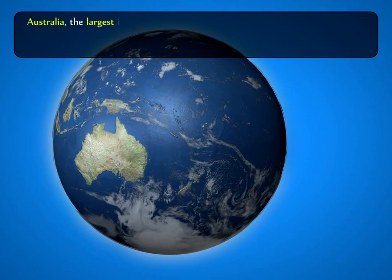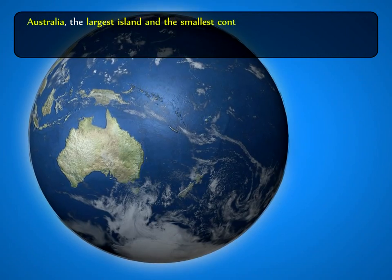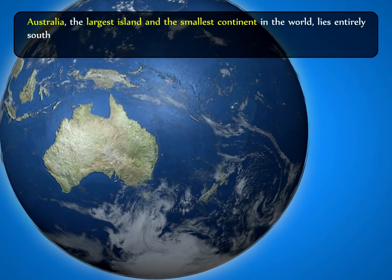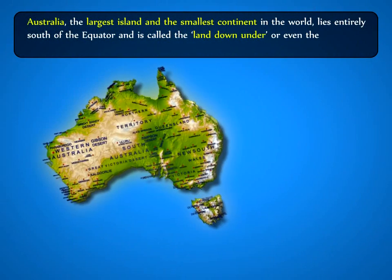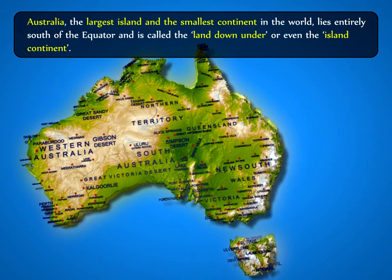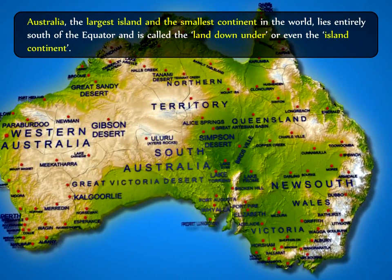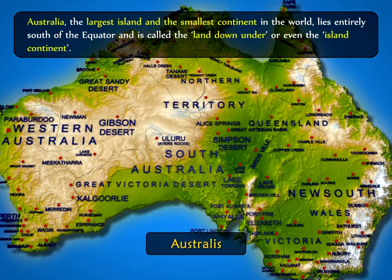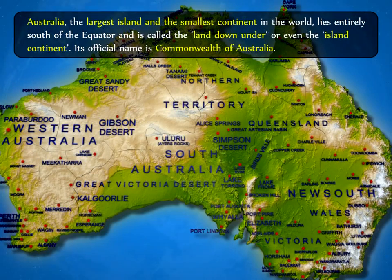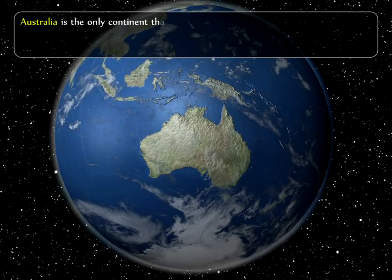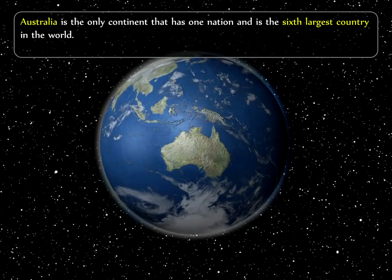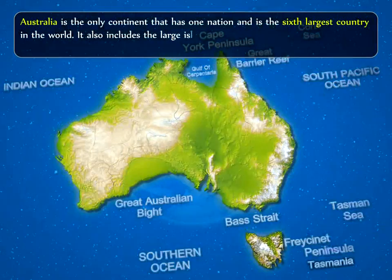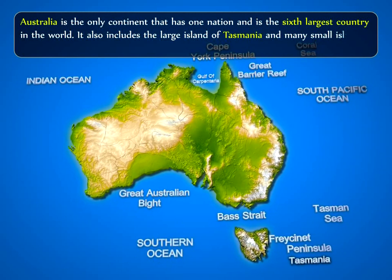Australia, the largest island and the smallest continent in the world, lies entirely south of the equator and is called the land down under or even the island continent. The name Australia is derived from the Latin word Australis meaning southern, and its official name is Commonwealth of Australia. Australia is the only continent that has one nation and is the sixth largest country in the world. It also includes the large island of Tasmania and many small islands.